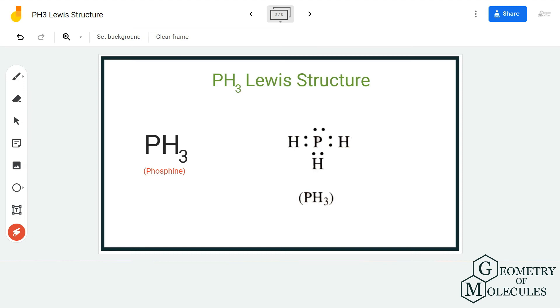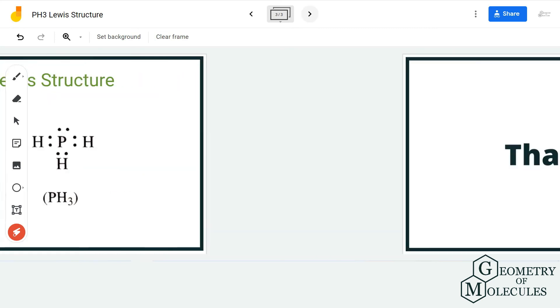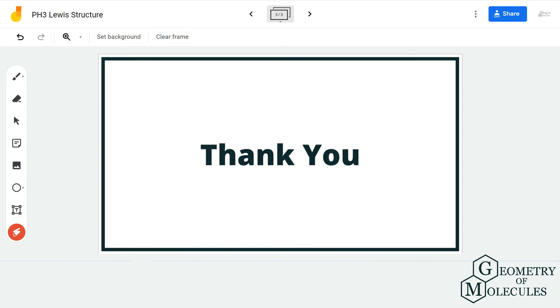So remember, phosphorus forms three single bonds with three hydrogen atoms in PH3 molecule. I hope this video helps you to understand that, and for more such videos on Lewis structure, molecular geometry, polarity of the molecules, make sure to subscribe to our channel and thanks for watching.